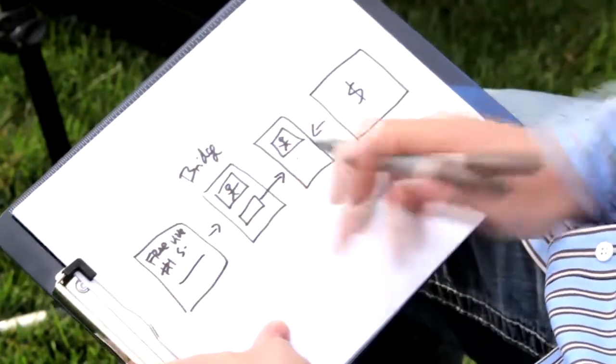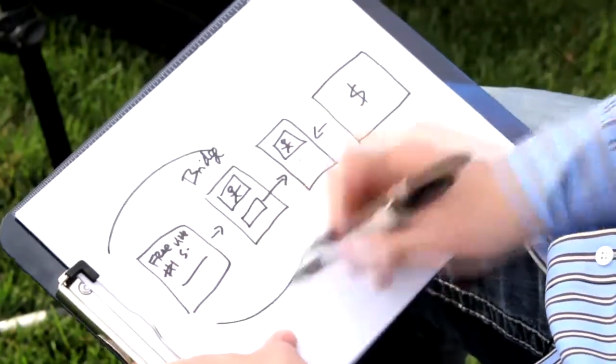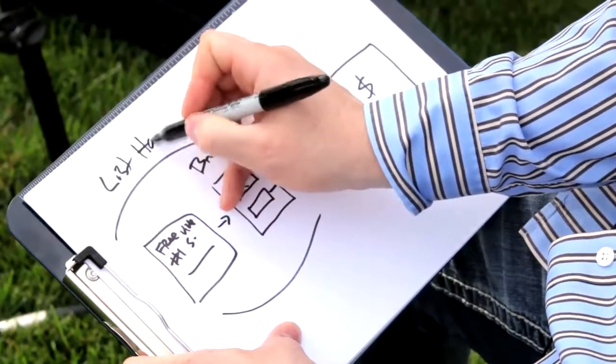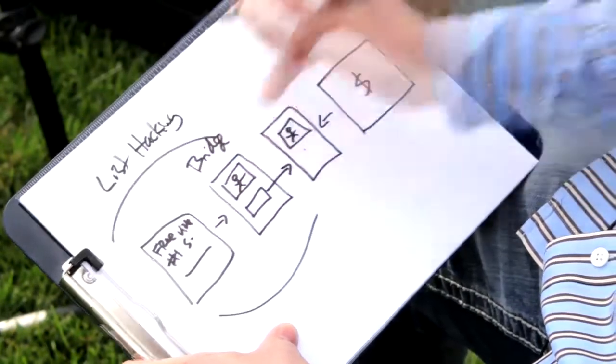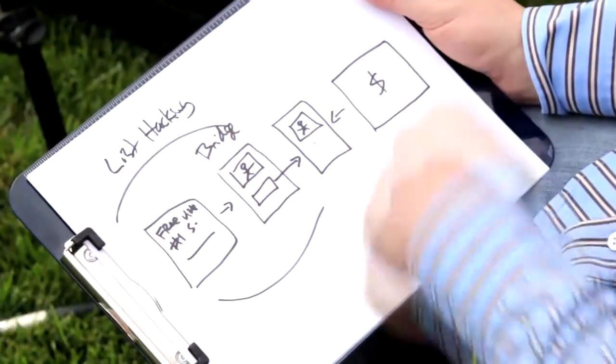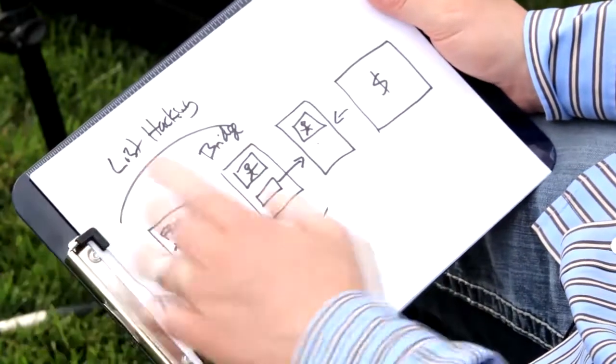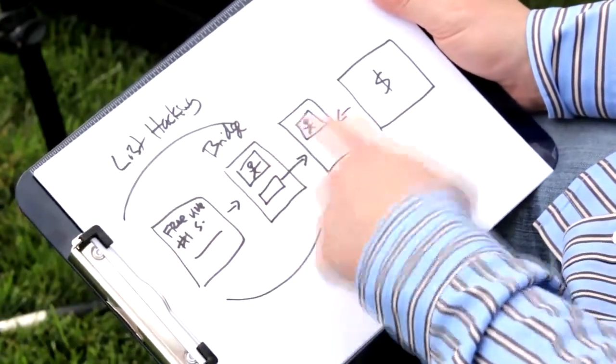This right here is what list hackers like you and me do. We go and find products or services we like in a market we want to build a list in. Then we build this little two-step list hacking funnel where we drive people in, they give us their email address, the next page we have a bridge page where we build a relationship, and then we send them off to go buy the product or service we recommend. And that is what list hacking is.